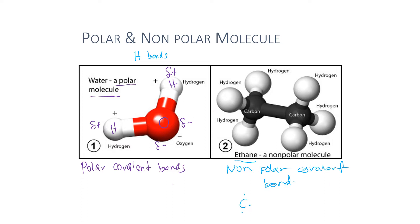In ethane, carbon has four valence electrons and shares electrons with hydrogen and with another carbon atom to satisfy the octet rule, forming covalent bonds within the molecule. All atoms in ethane have the same electronegativity, resulting in ethane being a non-polar molecule.